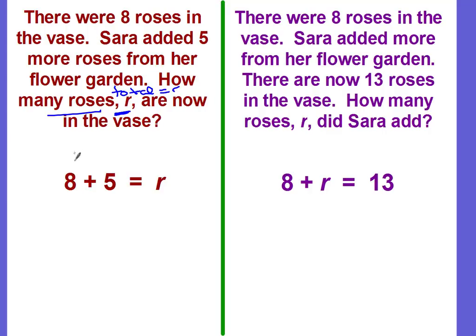So this would be our equation. Eight, which is the beginning number of roses in the vase, plus the five additional roses Sarah added, is going to equal R, the total.